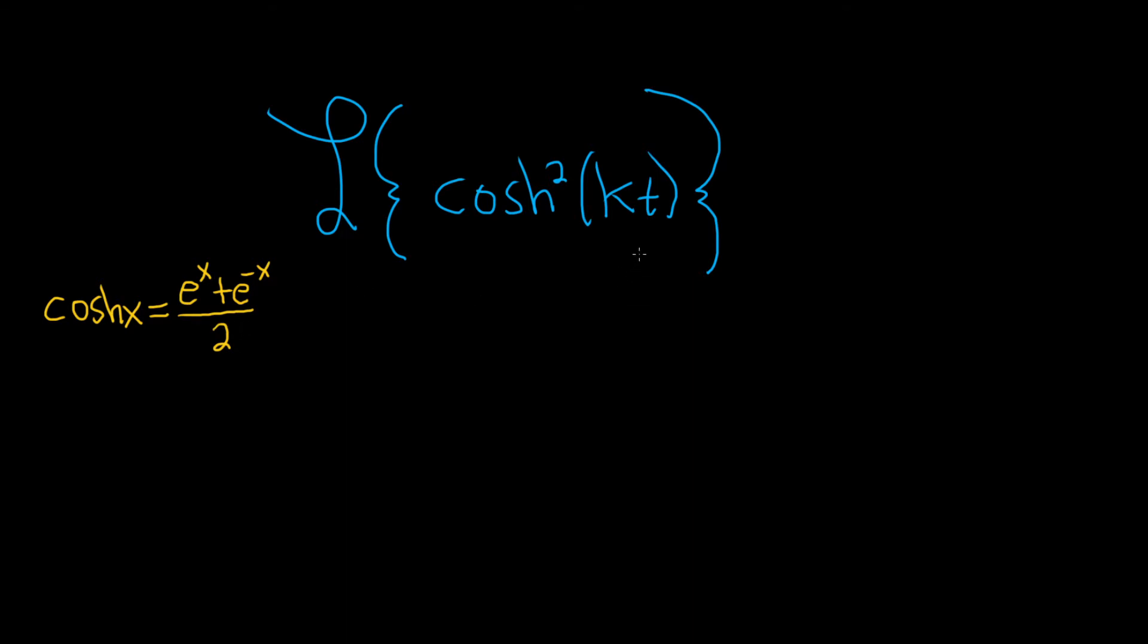So in this problem here, we have the hyperbolic cosine of kt, and it's squared. So let's work that out.